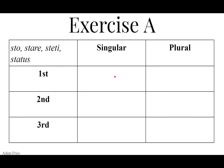For the pluperfect, stet is the perfect stem — you chop the I off the third principal part. Steteram, steteras, steterat, steteramus, steteratis, steterant. And then for the future perfect tense, once again the perfect stem is stet.